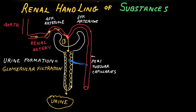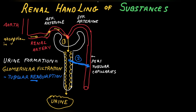Some substances are reabsorbed — they go from the tubular lumen, across the epithelial cell, into the peritubular capillaries. This is known as tubular reabsorption. When glomerular filtration is 180 liters per day, tubular reabsorption is 178.5 liters per day, so urine formation is 1.5 liters. We use the term 'reabsorption' rather than 'absorption' because absorption occurs in the small intestine.